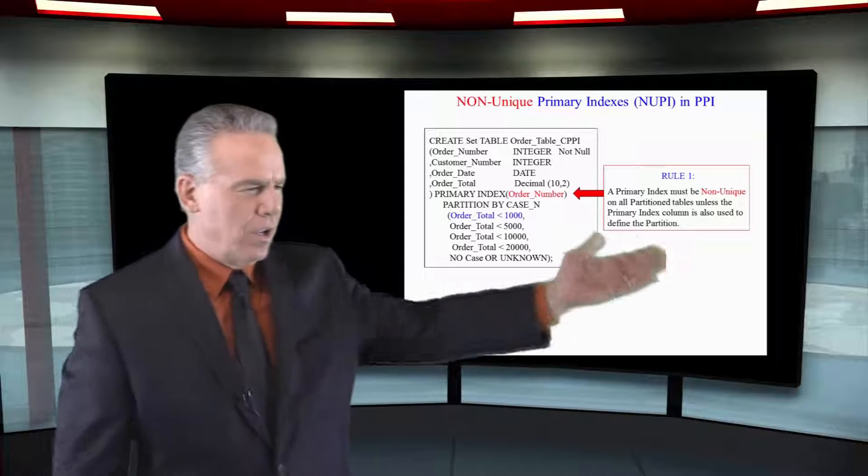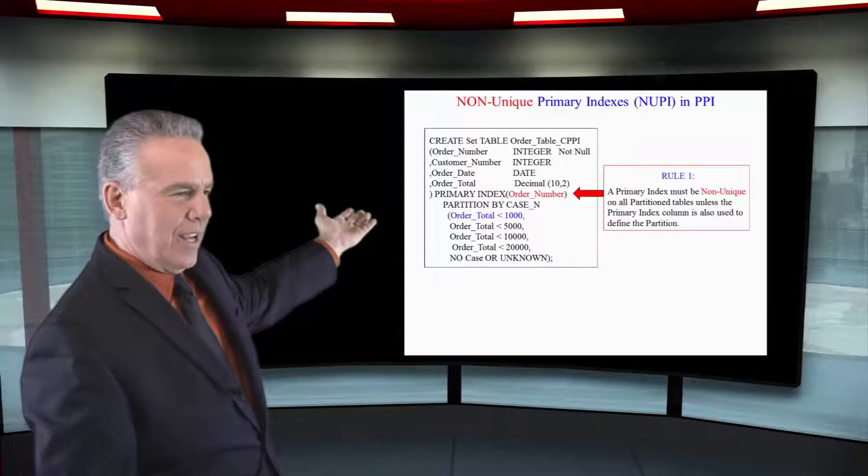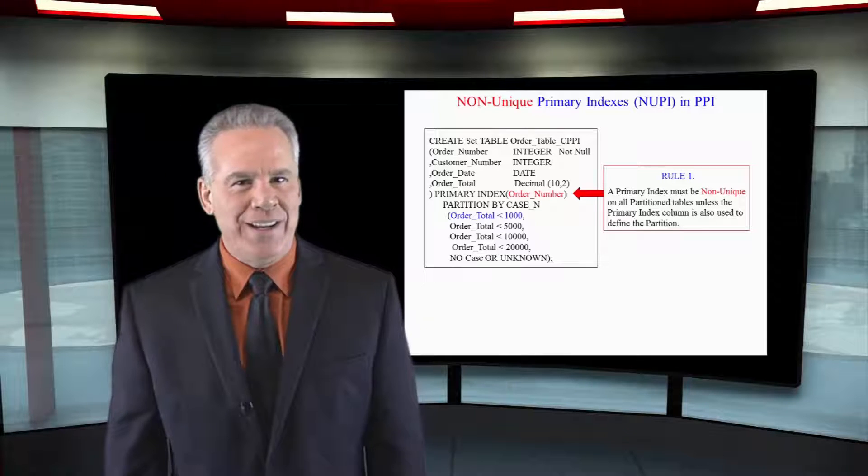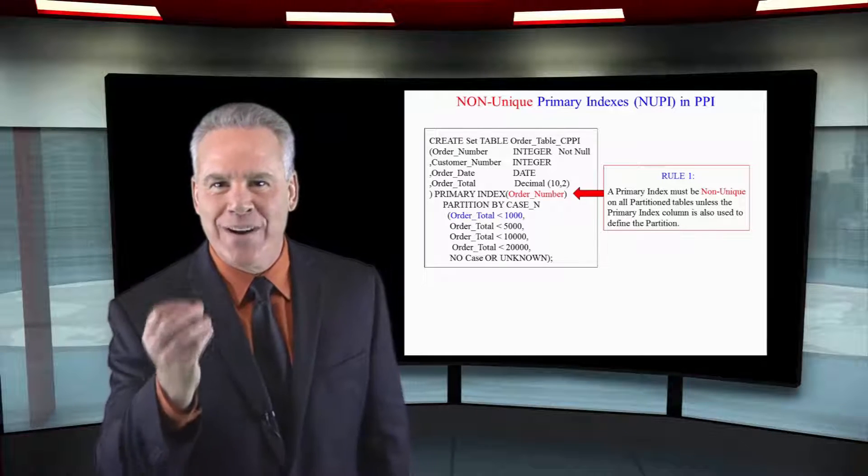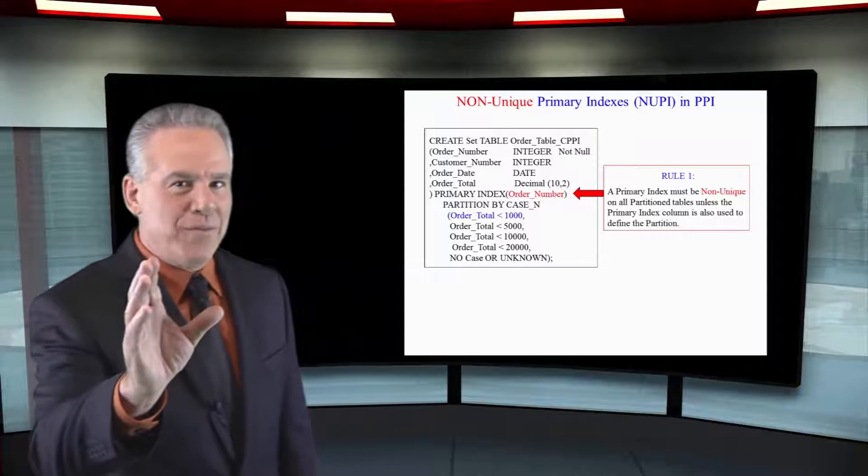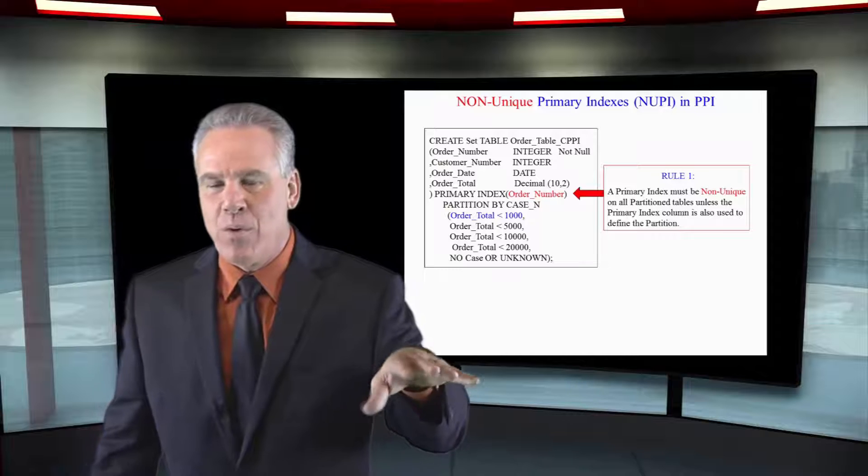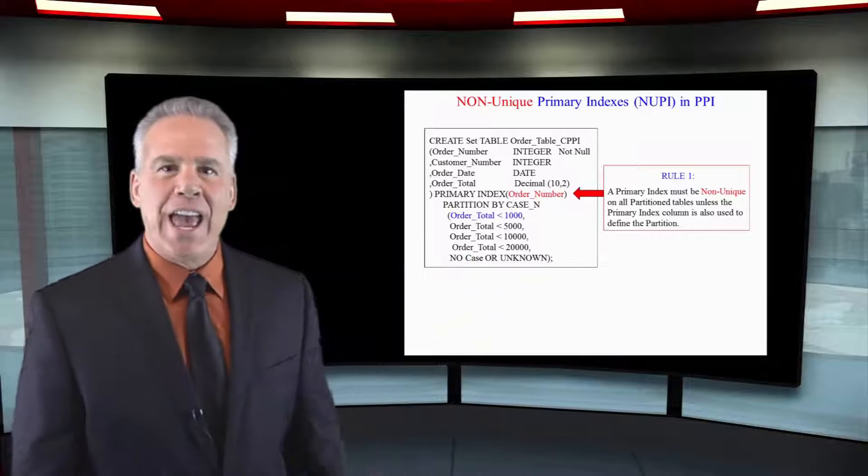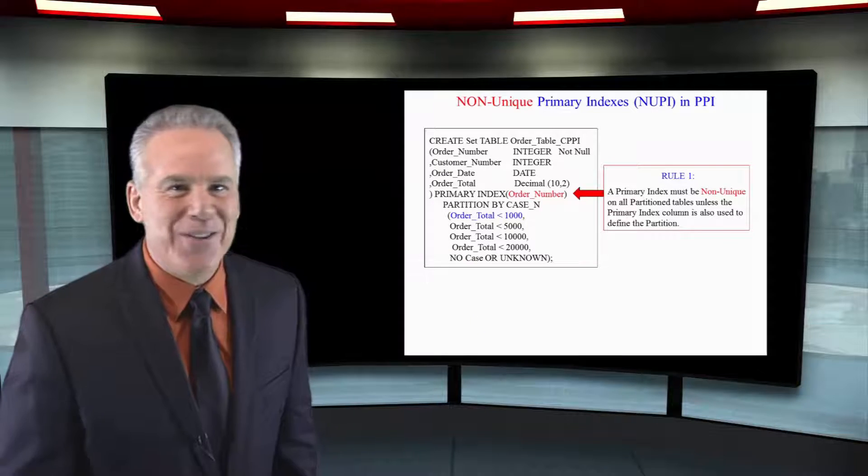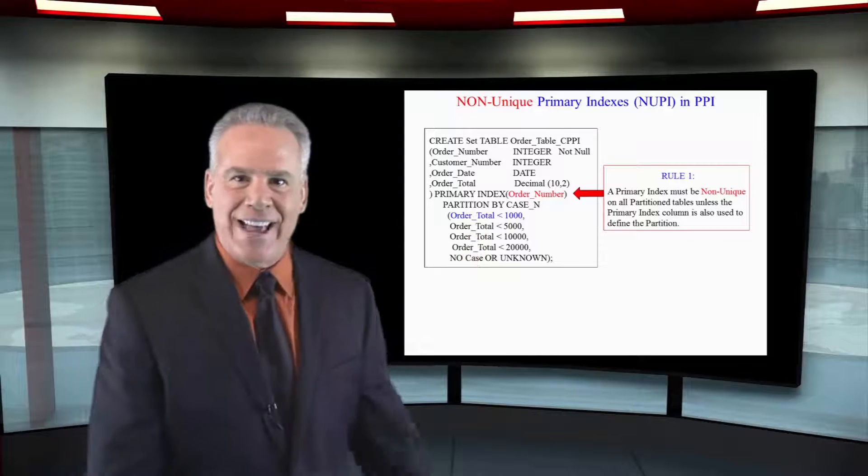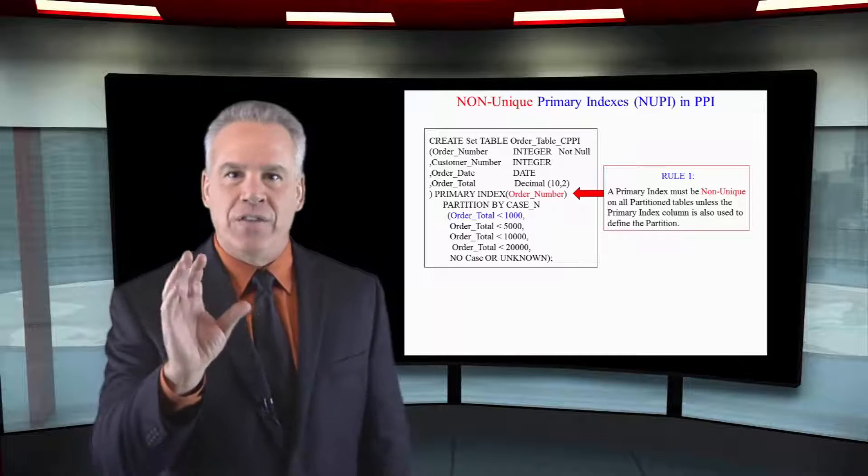You'll need to think a little bit more. Take a look at the primary index of this table. It is a non-unique primary index on order number. You may have noticed in every example, the primary index has always been a non-unique primary index. We had none that said unique primary index, and that is because this is the rule.